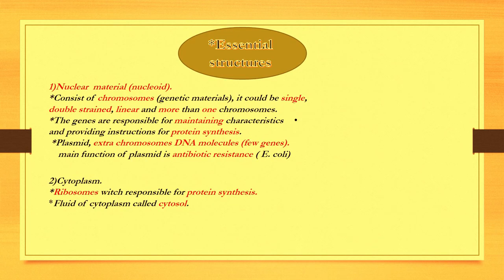Essential structures: First, nuclear material. The genetic material contains chromosomes, and the chromosomes may be as follows: single, double-stranded, linear, and more than one chromosome. It is responsible for the transfer of the genetic characteristics from one bacteria to another, such as spore, antibiotic resistance, endotoxin, exotoxin, and others.